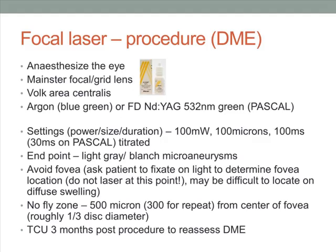The procedure is very similar to the panretinal photocoagulation procedure, except that in this case you would choose a Mainster focal grid lens or the Volk Area Centralis lens. The laser machine is exactly the same. Settings are different — we usually aim for 100 milliwatts, 100 microns, and 100 milliseconds, and titrate to obtain a light gray burn or to blanch the microaneurysms.